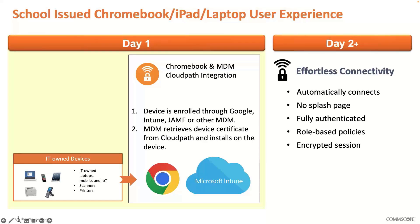Once you have this set up and configured, the user experience is: you get that device into your MDM, and that's it. The MDM is going to talk to CloudPath, CloudPath gives it device access. We prefer certificate-based device access — that's 802.1X with EAP-TLS, the most secure way. It's going to automatically install that certificate on the device. And then from day two on, as long as that certificate's good, that device just seamlessly connects.